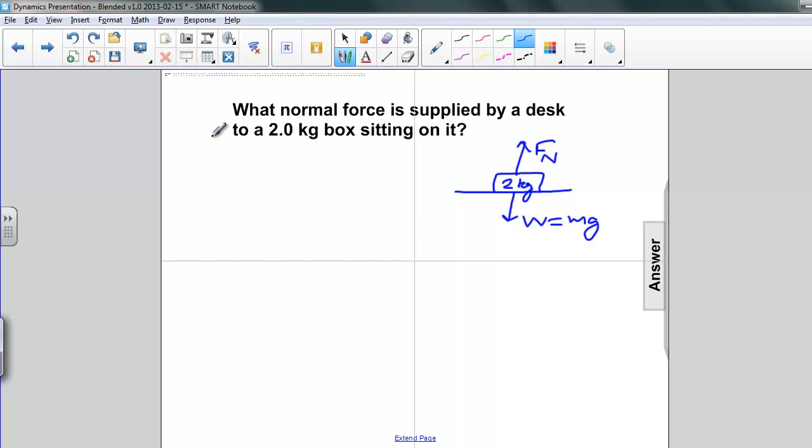So let's calculate the normal force. First of all, we know mass is 2 kilograms. Then we know the acceleration due to gravity is 9.8 meters per second squared, and what we need is the normal force.